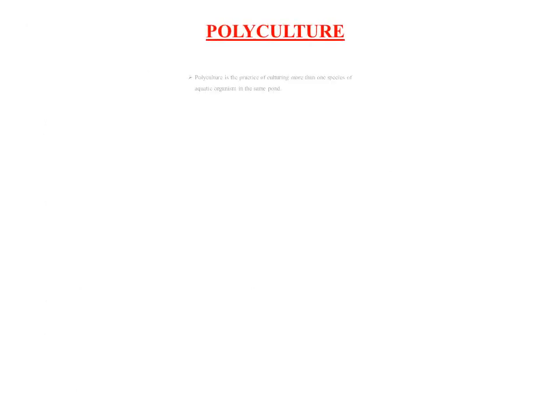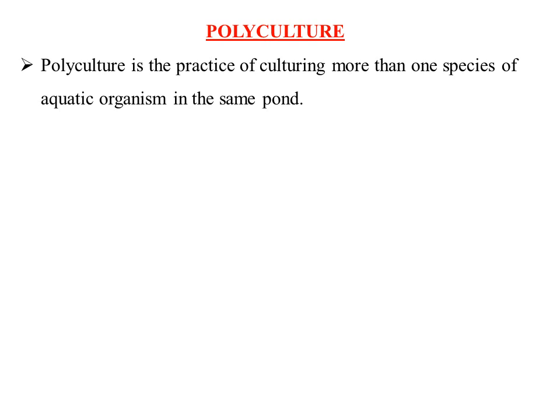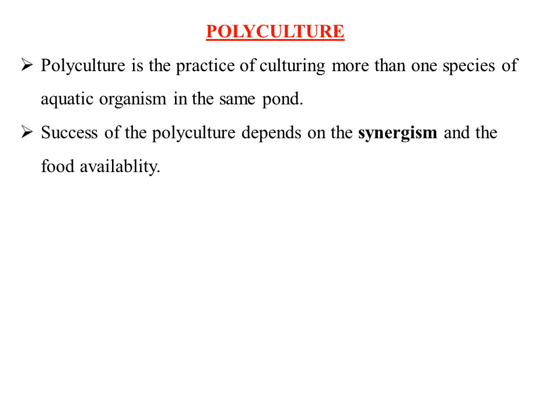In polyculture, more than one species are cultured in an aquatic environment. The practice of culturing more than one species in the same pond is referred to as polyculture. The success of polyculture mainly depends on synergism and food availability. Synergism refers to the interaction or cooperation between the two species.